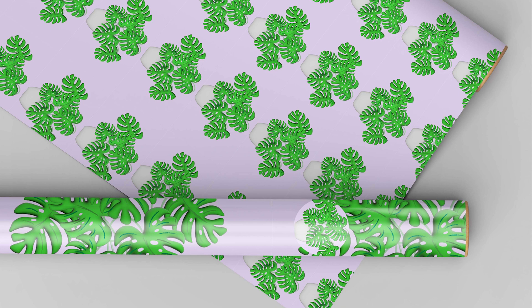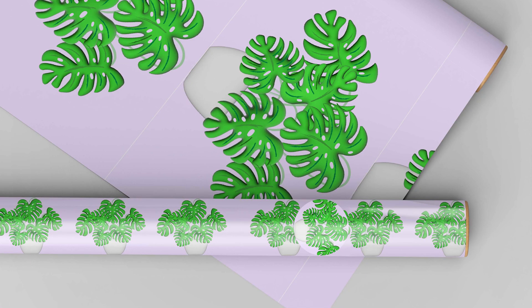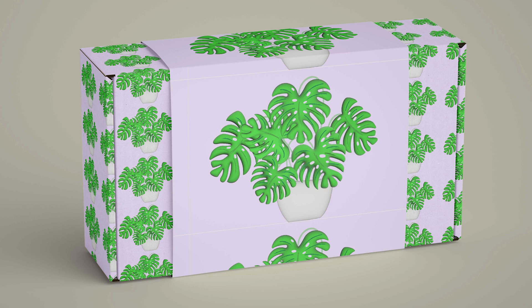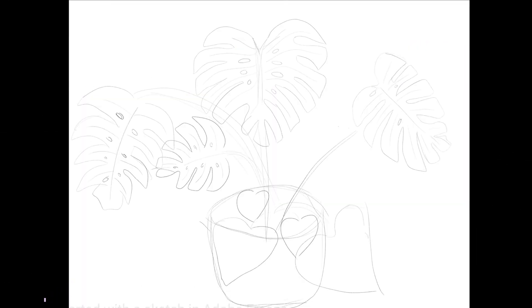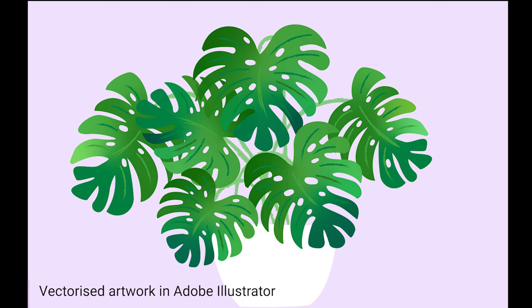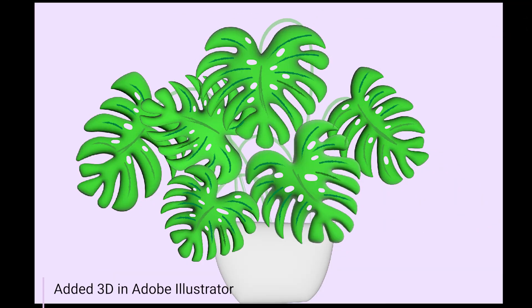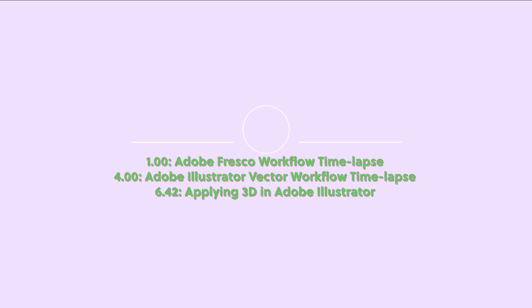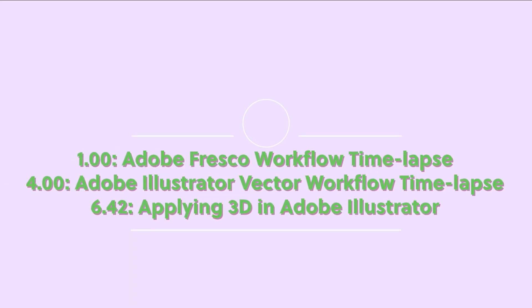Hi everyone, my name is Rosie Sue. Welcome to today's video where I will show you how you can use 3D in Illustrator. In the first bit it will be a time-lapse with a soundtrack showing how I started this drawing in Fresco, then I took it into Illustrator on the iPad to vectorize it, and finally I will do a voiceover tutorial on how you can use 3D in Illustrator on the desktop. I've put timestamps on screen if you want to skip ahead. Let's get started — thanks for tuning in.